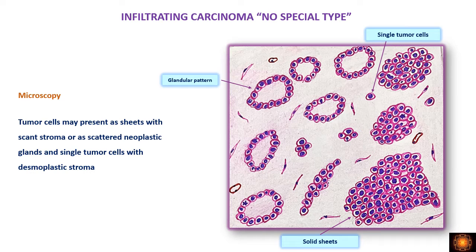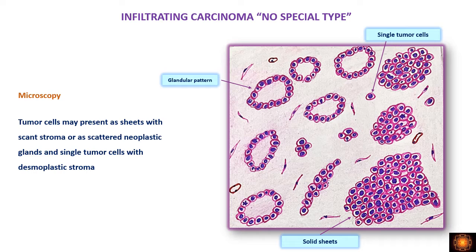Microscopically, the pleomorphic ductal cells are arranged in a glandular pattern, or present as solid sheets, single tumor cells, or cords — any of these patterns can be present in infiltrative carcinoma no special type. Importantly, the stroma between these tumor cells is desmoplastic: the tumor cells themselves produce collagenous stroma, so more collagenous deposition is present between the tumor cells.